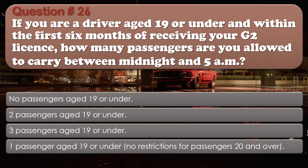Question number 26: If you are a driver aged 19 or under and within the first 6 months of receiving your G2 license, how many passengers are you allowed to carry between midnight and 5 a.m.? Options: No passengers aged 19 or under. 2 passengers aged 19 or under. 3 passengers aged 19 or under. 1 passenger aged 19 or under. No restrictions for passengers 20 and over.